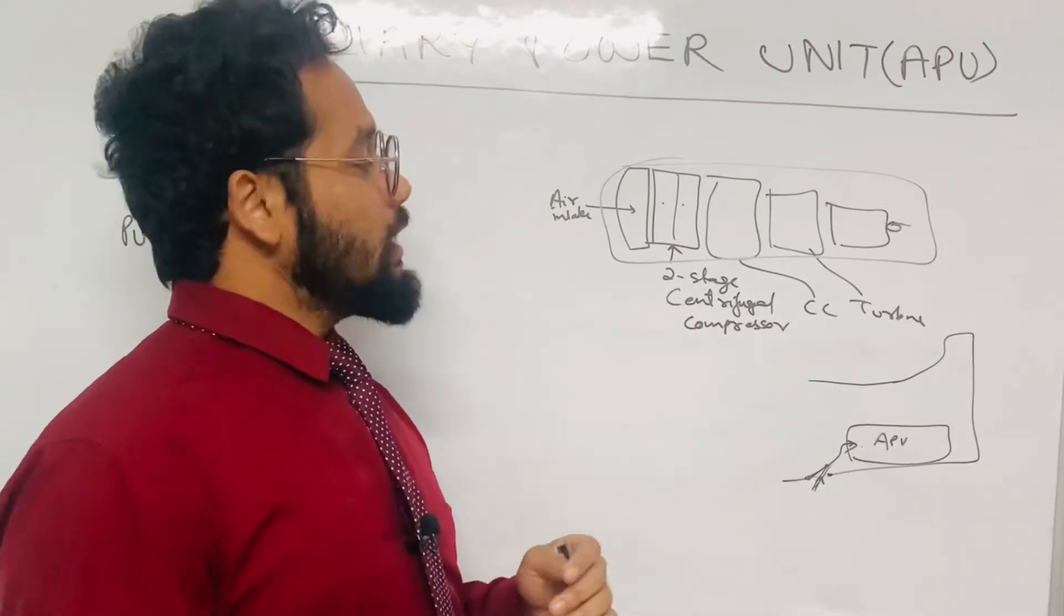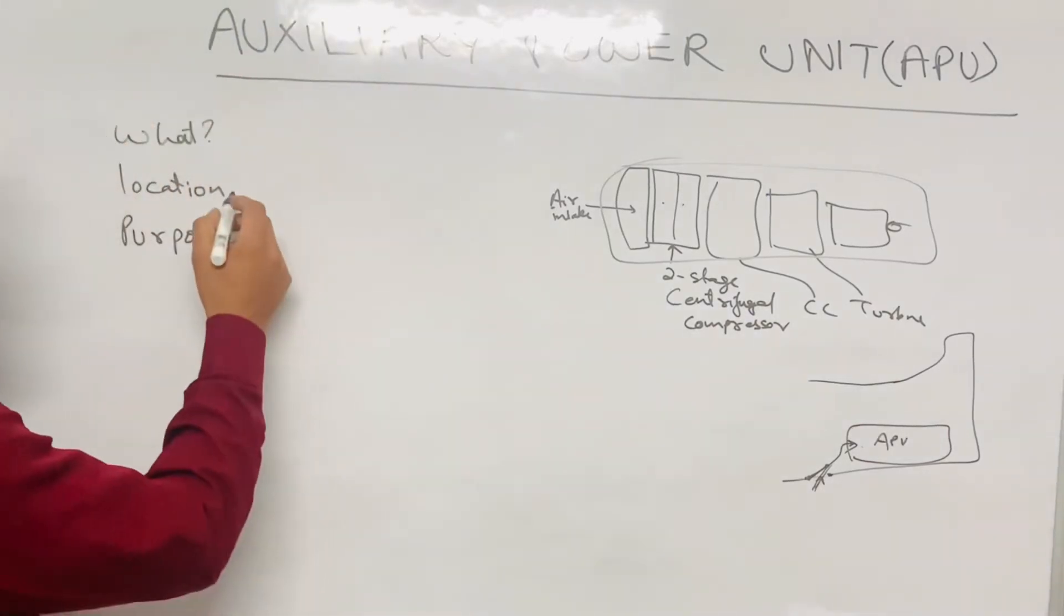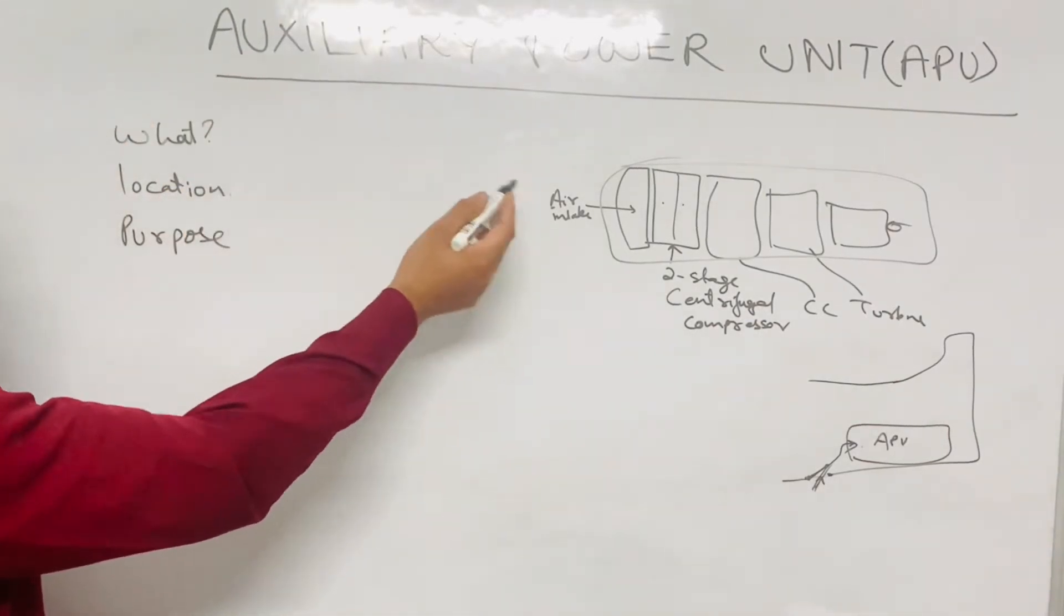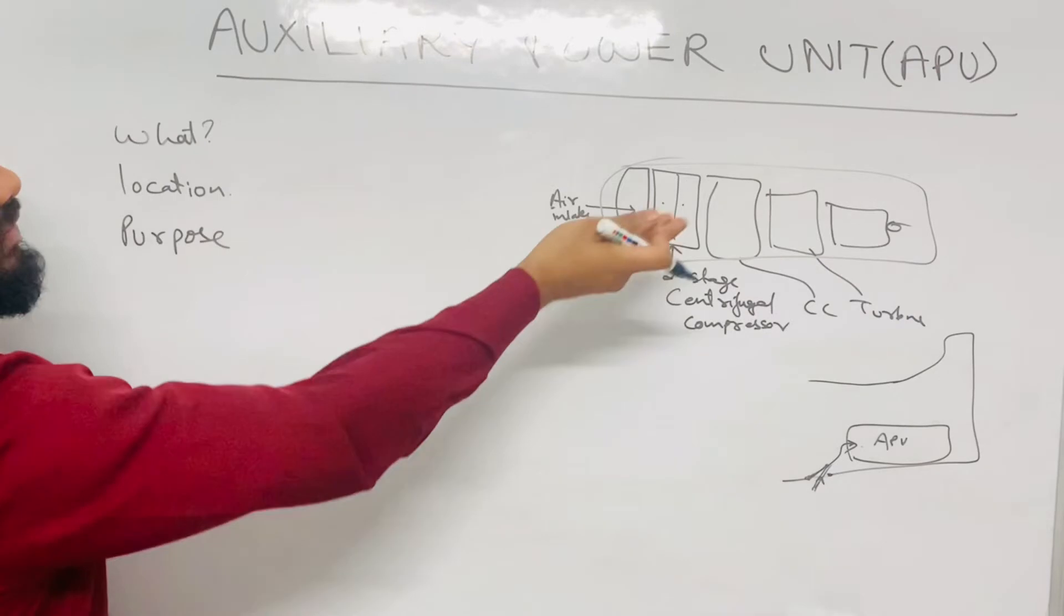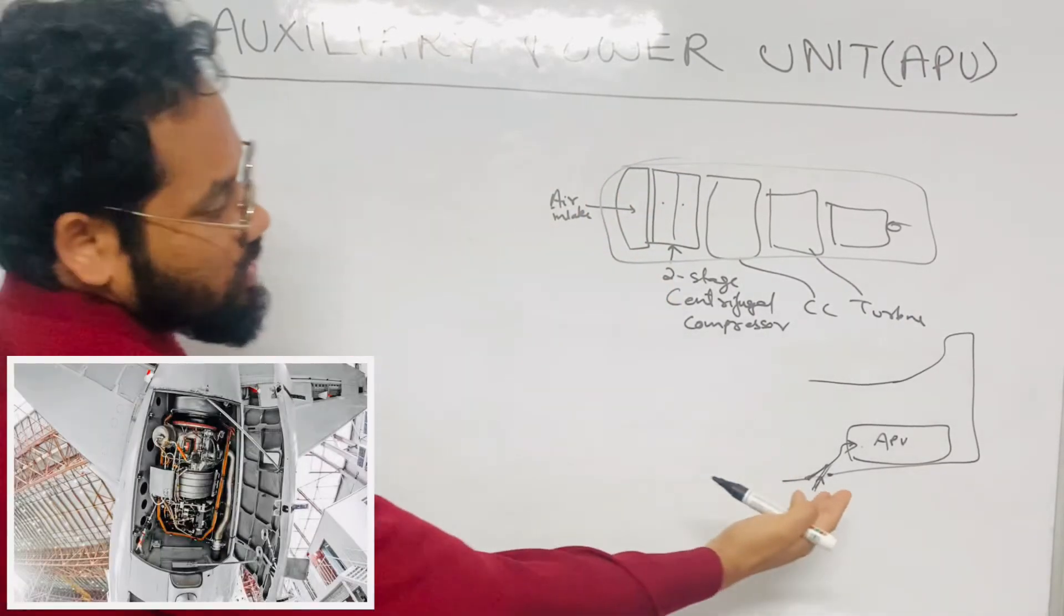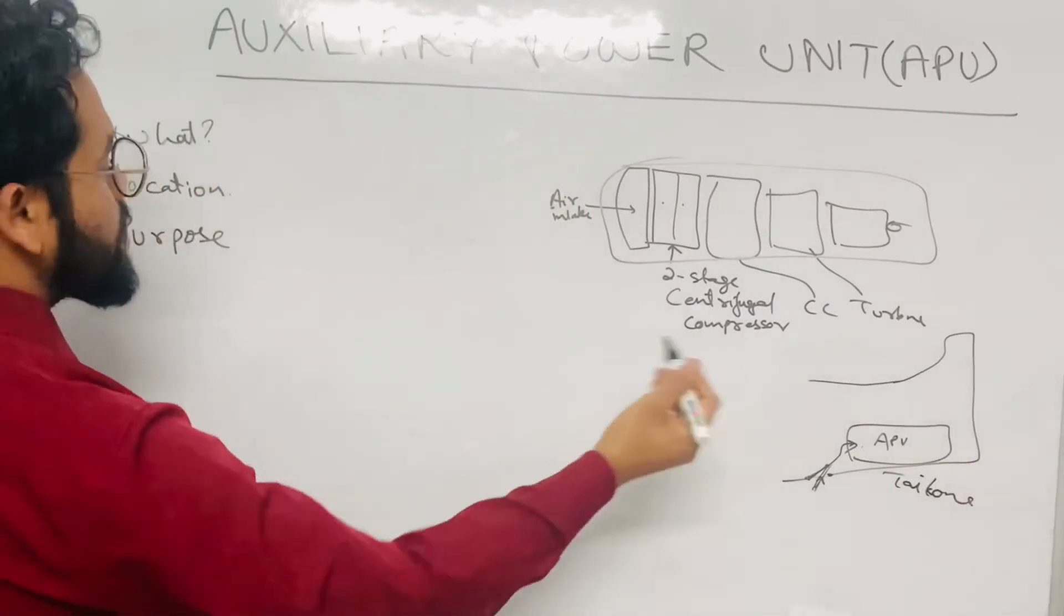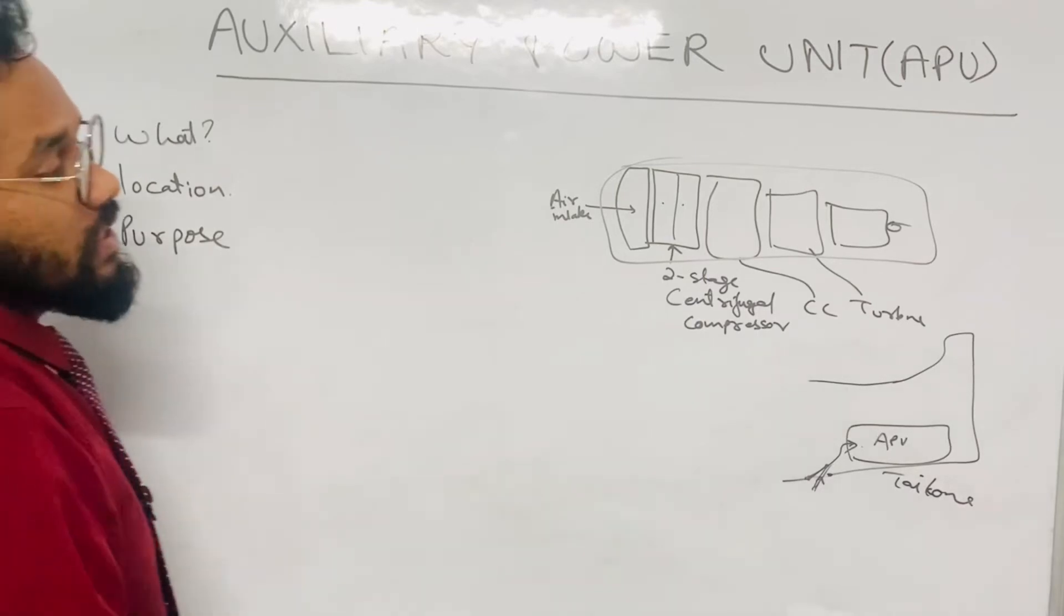Now you are clear with what is APU. So APU is a small gas turbine engine having all these stages. And what is its location? Its location is in the tail cone of an airplane.